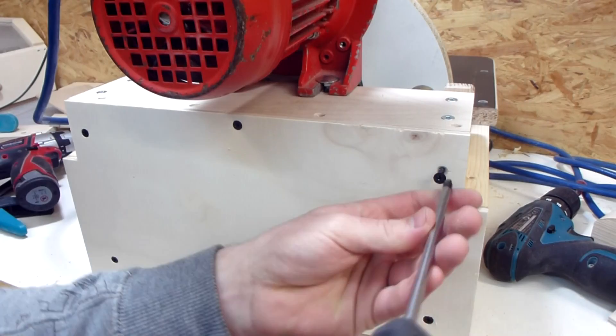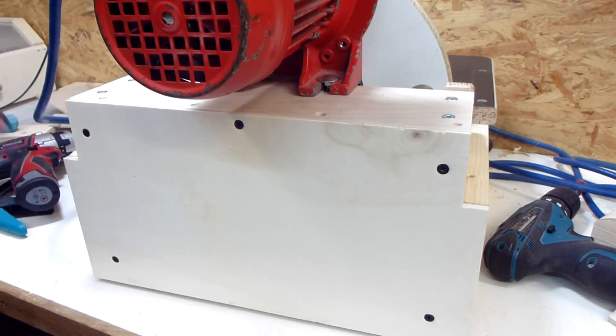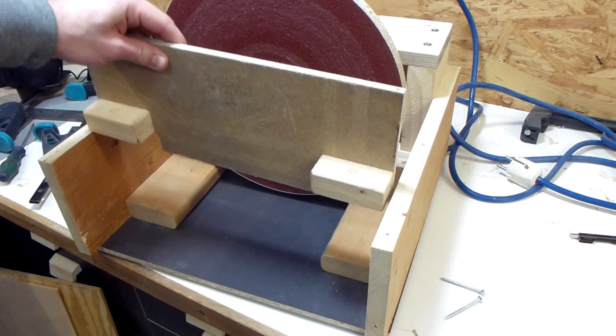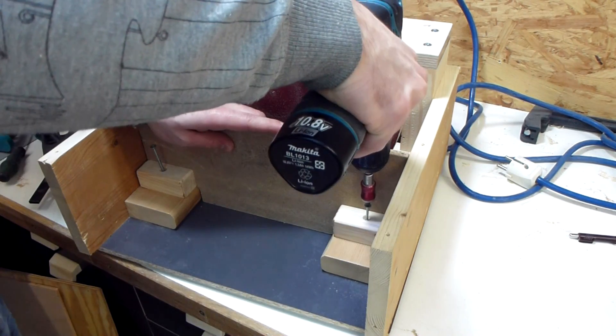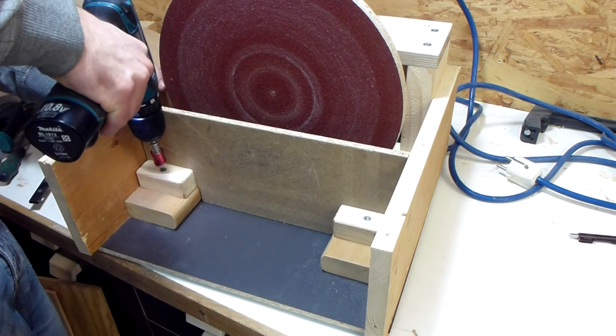Then I focused on making an enclosure. The back is just screwed on, nothing fancy here. There is also a little cover in the front under the table that should improve dust collection and protect the disc from below.